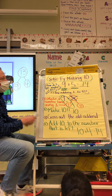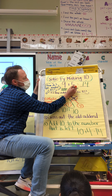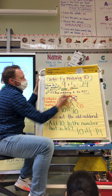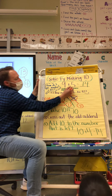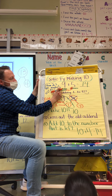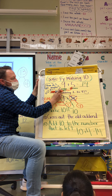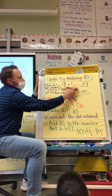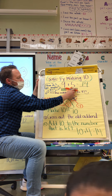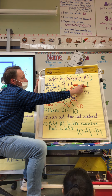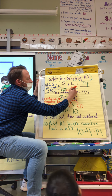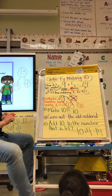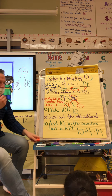Basically, all we did by breaking apart the five is we took one of these counters and moved it over here, and we made ten. Now we have ten counters here and then one, two, three, four here — and ten and four is fourteen. So you turn it into ten plus four is fourteen.